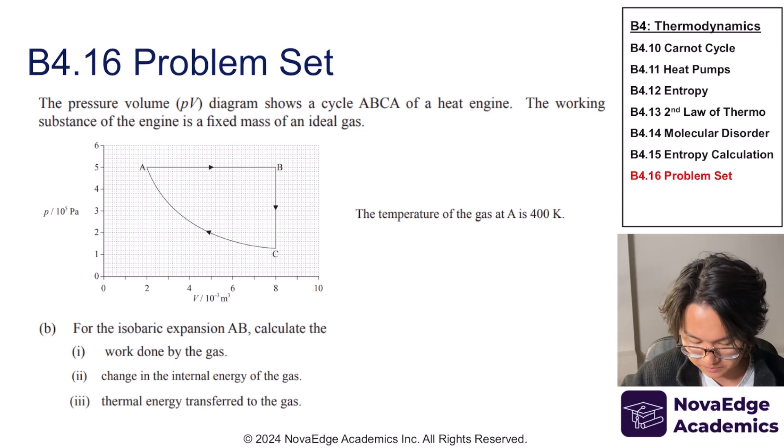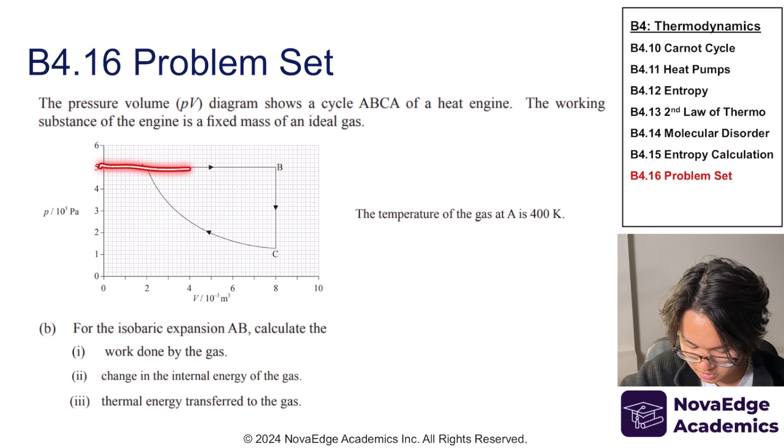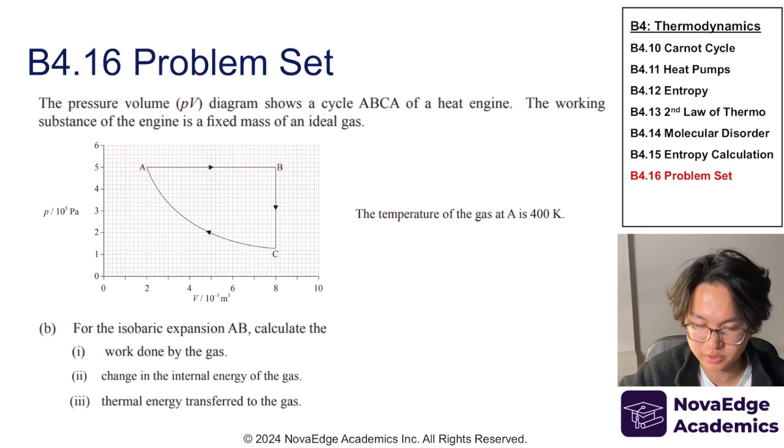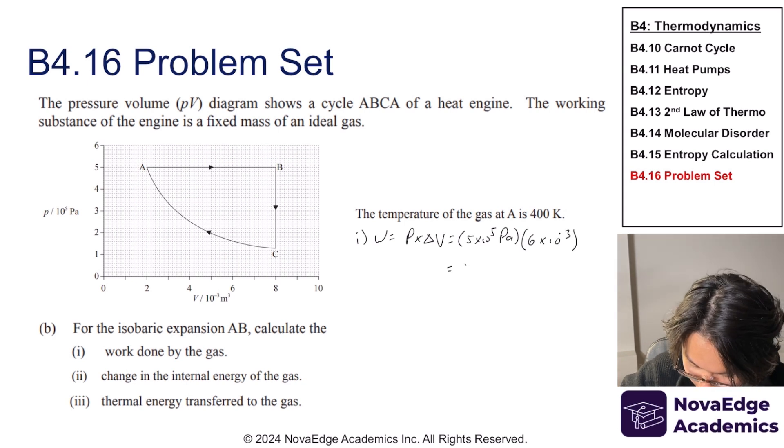So let's move on to part B. Pause the video and give this one a try. All right, so let's calculate the work done by the gas. They're telling us it's isobaric expansion, but of course, we know it's isobaric because it's at constant pressure from the PV diagram. So let's calculate the work done. Work done is equal to P times delta V, which is equal to, this is just 3000 joules.